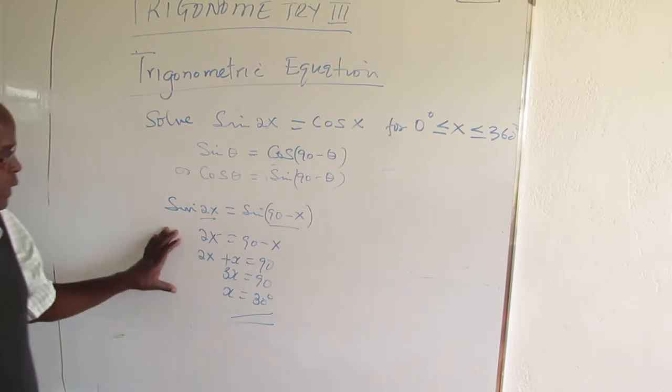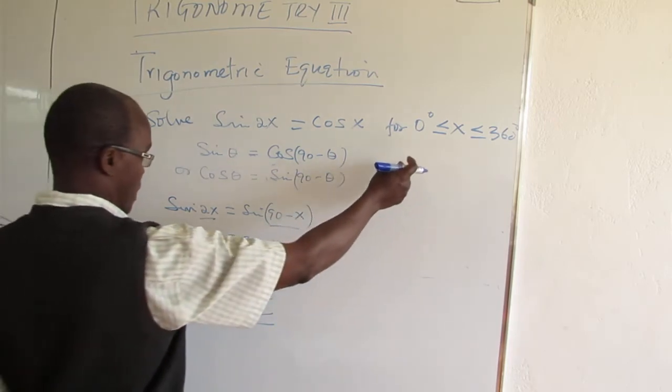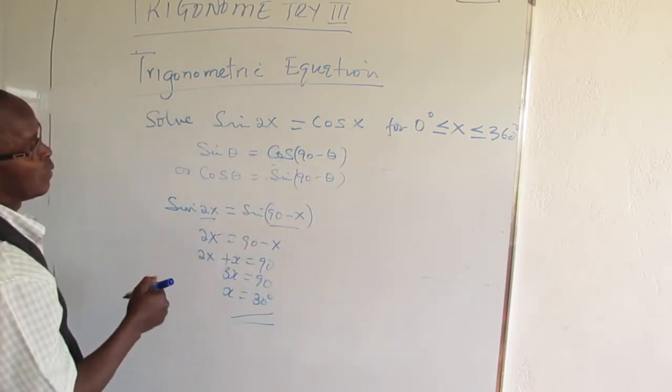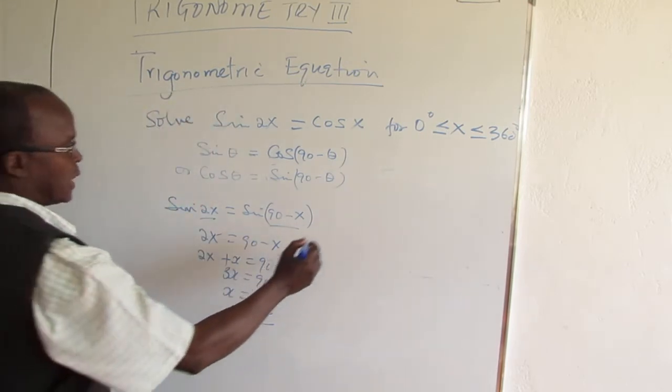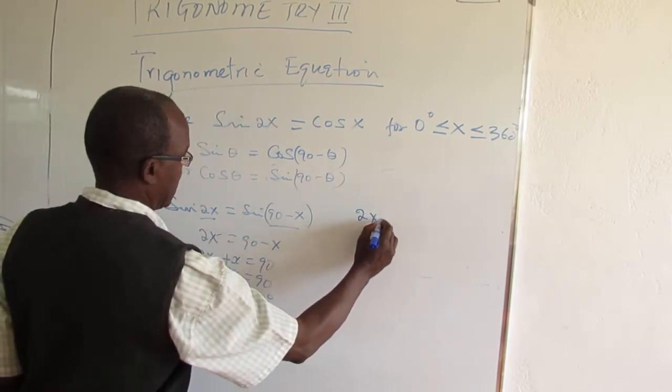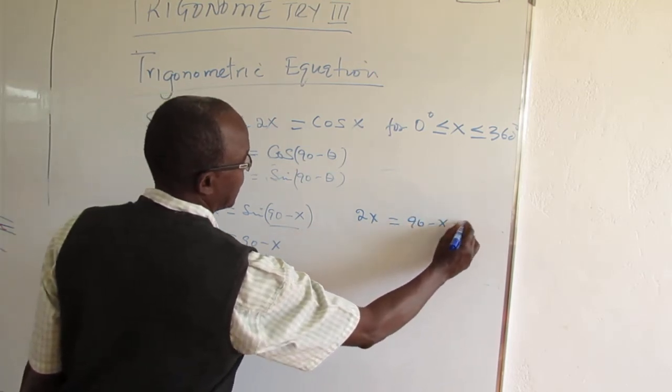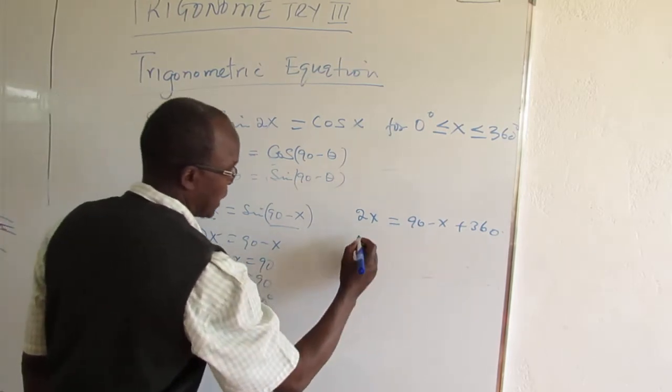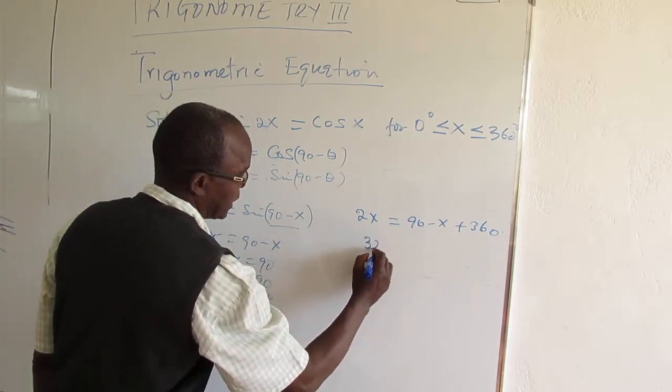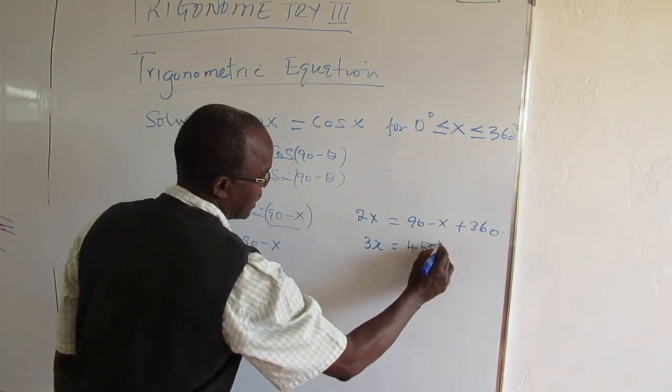But since we were given between 0 and 360, the other section can be 2x equals 90 minus x plus 360. Put the right terms together again, 3x equals 450, so x is 150 degrees.